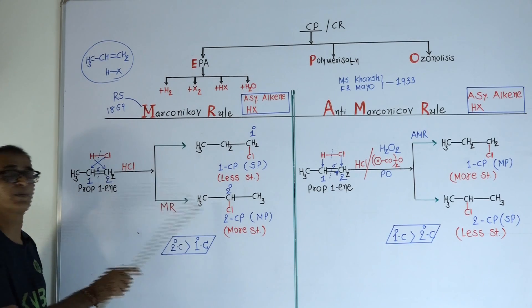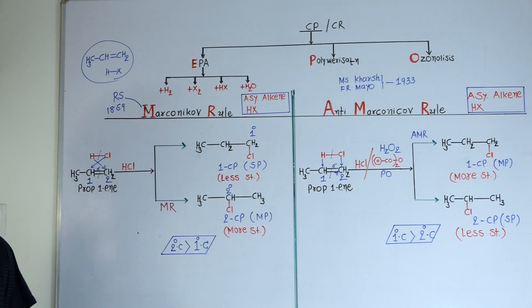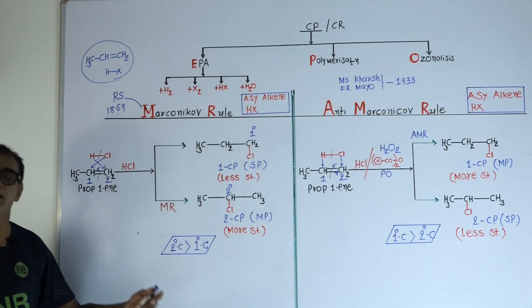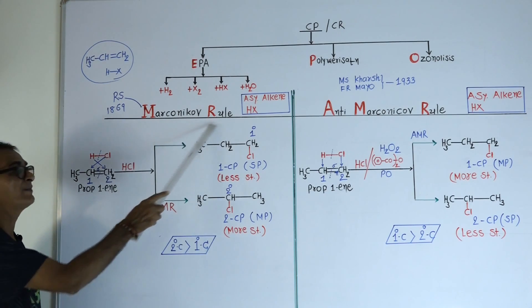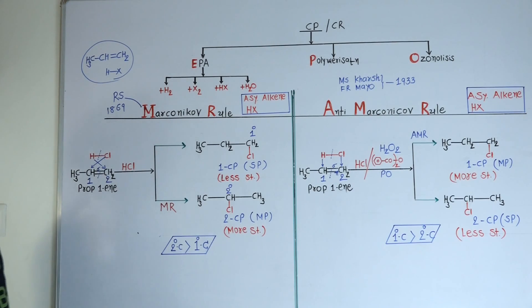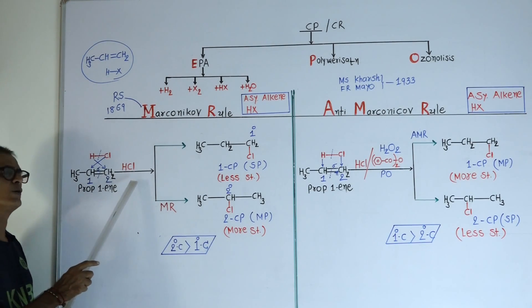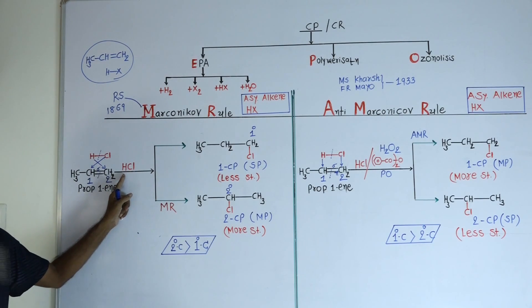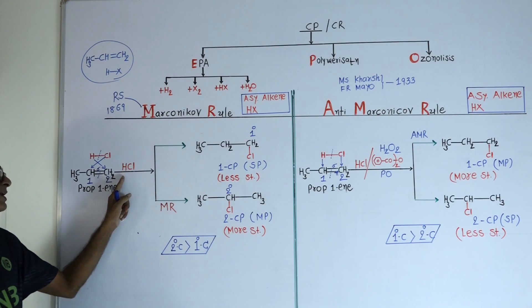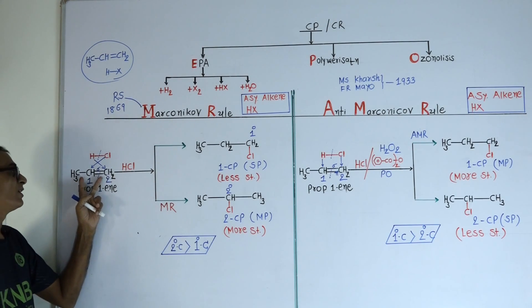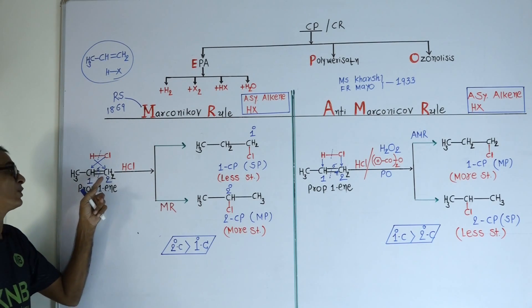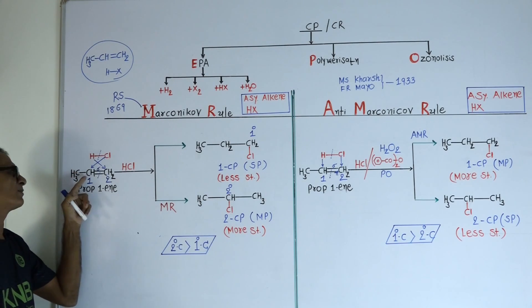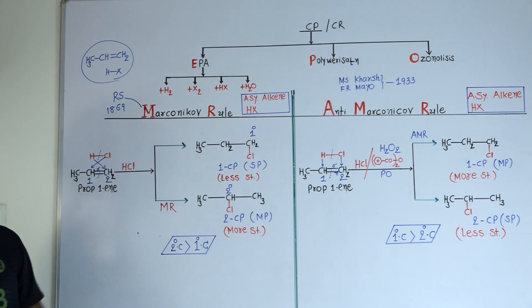There are two possible products. Among the two products, which one is more stable and which one is less stable? Which one will be obtained in more proportion and which one in less proportion? According to Markovnikov rule, the more electronegative part (halogen) will attach with the carbon atom having less number of hydrogen atoms.